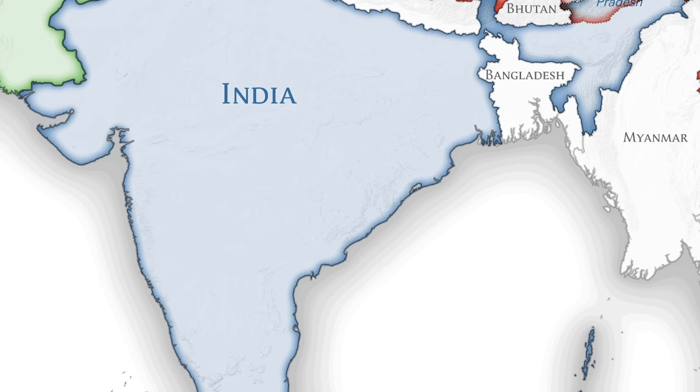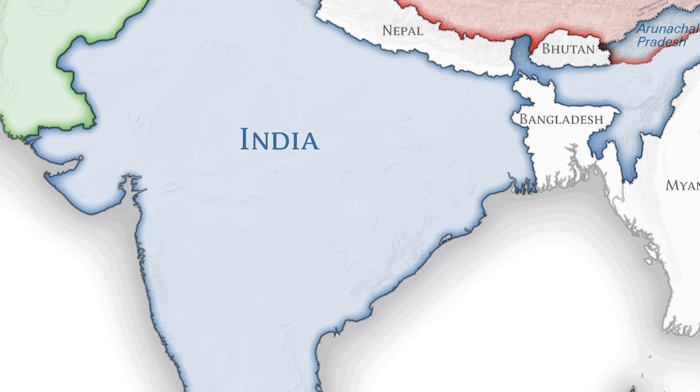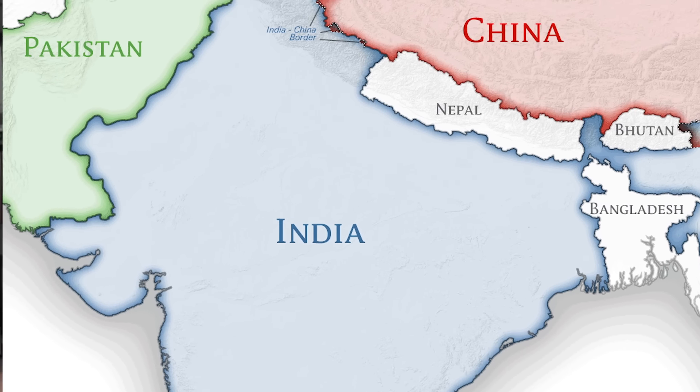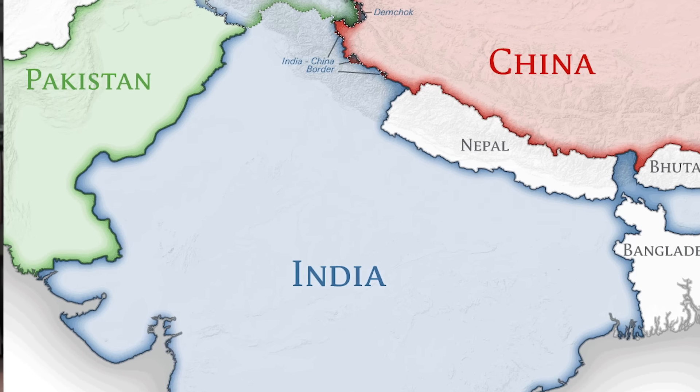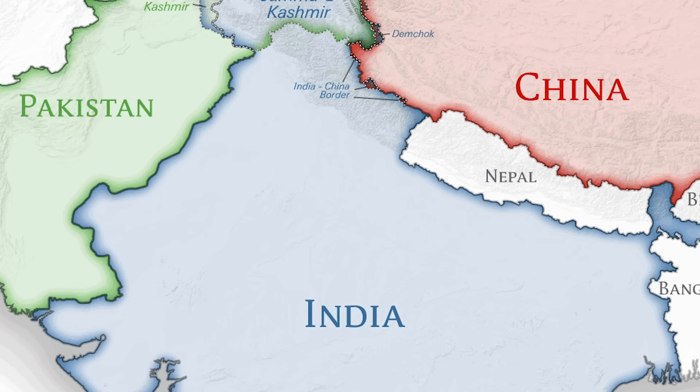India was a majority Hindu population; however, there was a significant Muslim minority among them as well. When the Muslims thought about an independent India, they feared that their voices as the minority would be lost to the Hindu majority. So the proposal was a two-state solution — upon independence, India would be separated into two states: India for Hindus and Pakistan for Muslims. None of this actually came to pass until after World War II, but it was during this time that all the groundwork was laid for these developments.